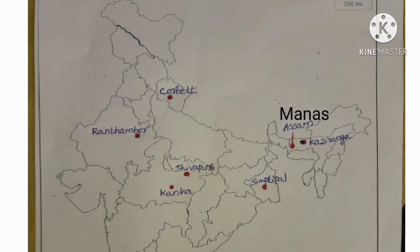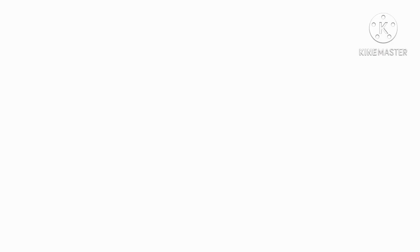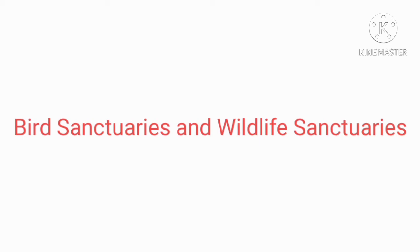Next, Bird Sanctuaries. Let us locate Bird Sanctuaries and Wildlife Sanctuaries on the map. First one, Bharatpur Bird Sanctuary is located in Rajasthan. Can you see Bharatpur Bird Sanctuary? Next one, Ranganathittu Bird Sanctuary is located in Karnataka.